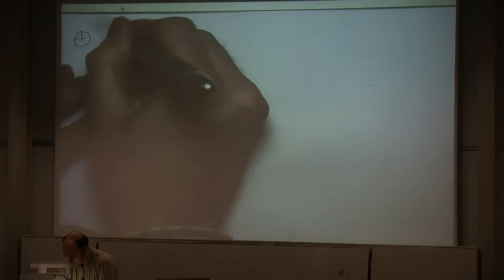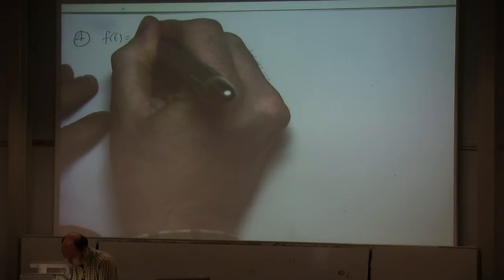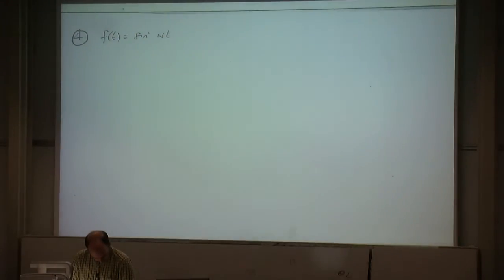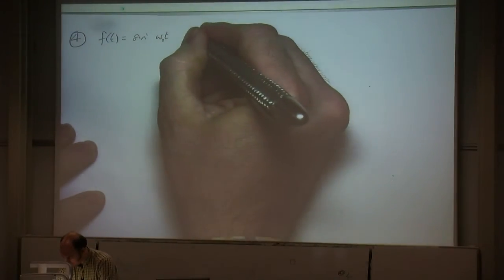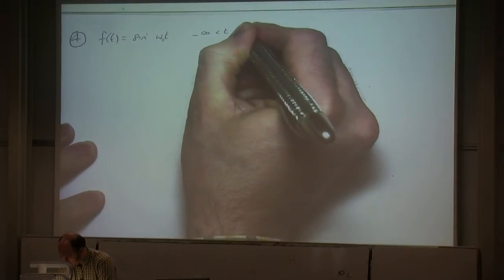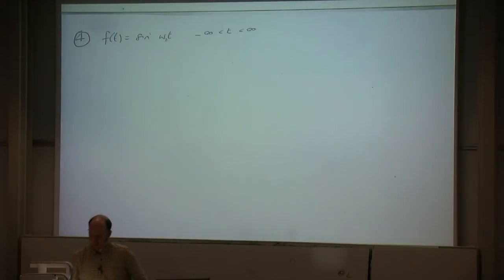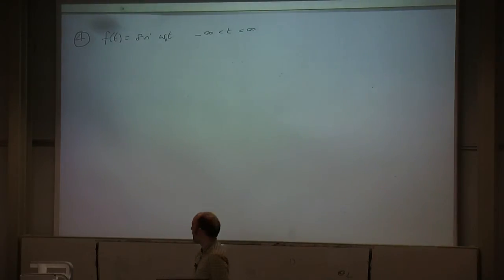We'll start with exercise number 4. Exercise number 4 says: come up with the Fourier transform of a pure sine wave, where f of t is a pure sine wave for all time.